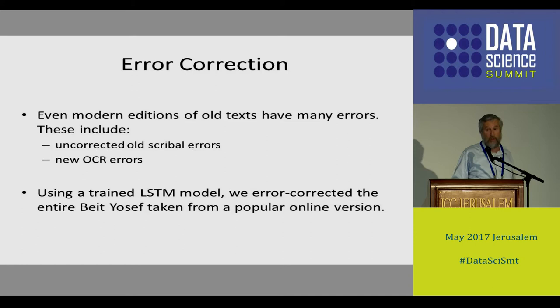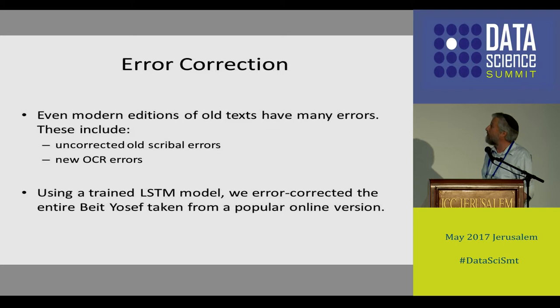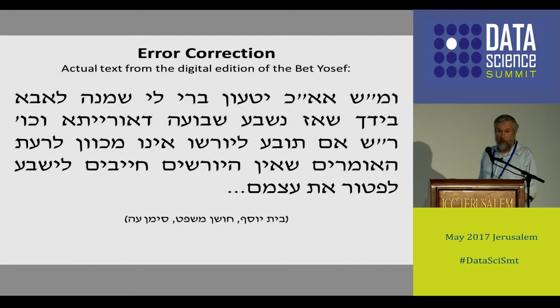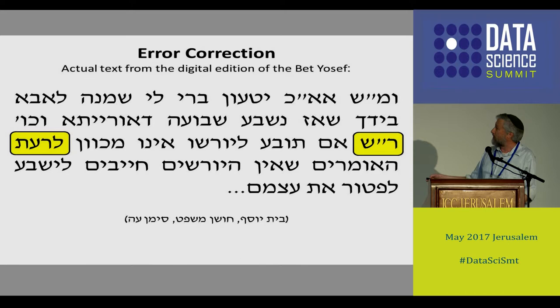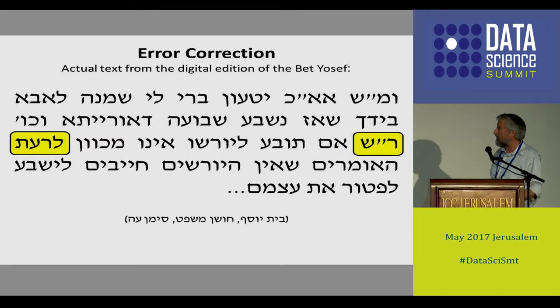Now let's talk about error correction. There are two kinds of errors in old texts: actual scribal errors reproduced in printed versions, and OCR errors introduced when texts were digitized. We use an LSTM to error-correct the Beit Yosef from the most popular online version. In just one paragraph, there are two mistakes: one where a Resh-Shin should be Lamed-Shin (i.e., 'lashon'), and another where a Resh should be a Dalet (the word is 'ladaat'). There are thousands of such mistakes. We have pretty high recall and precision rates — surprisingly good.